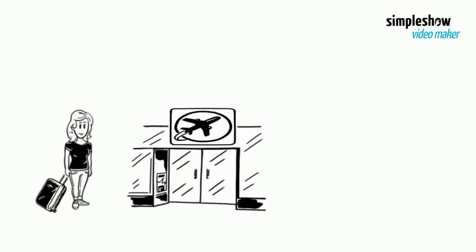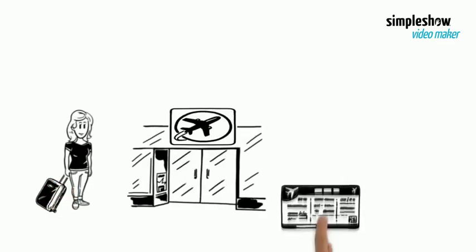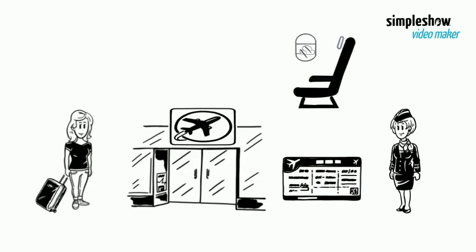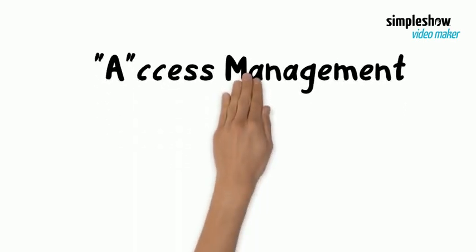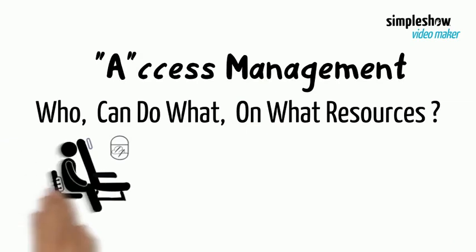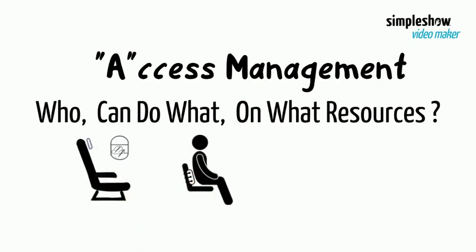Passing the security gate, Katie comes to the boarding gate to get on her flight. She shows her boarding pass to the airline staff and gets on the airplane. She walks down the aisle to sit on her assigned seat next to the window. She is all set to fly. This boarding process is just like access management — the A part of IAM. Access management is all about who can do what on what resource. The seat, 8A, on the airplane is a resource. Sitting is the action.